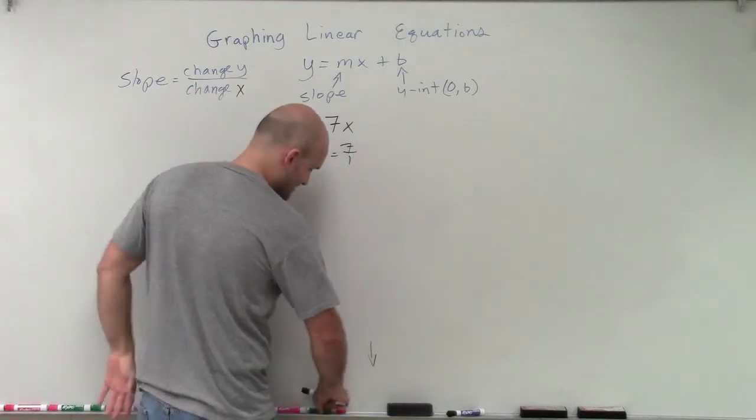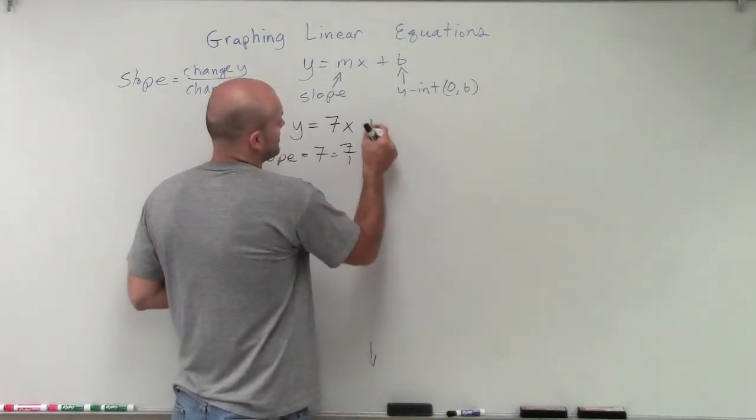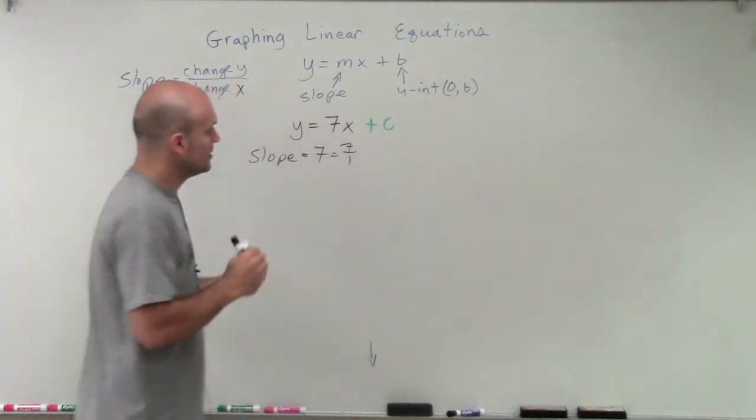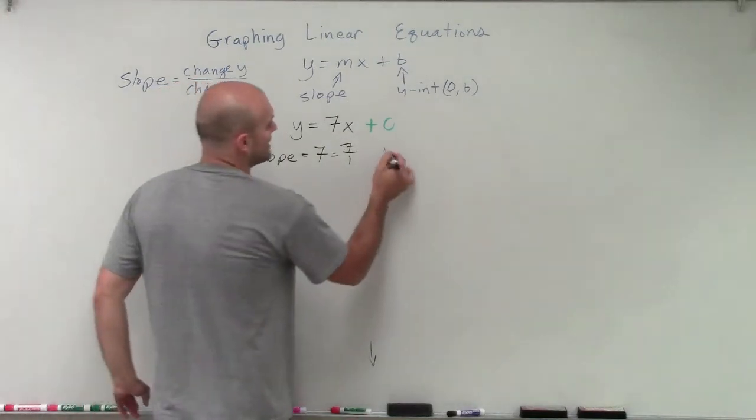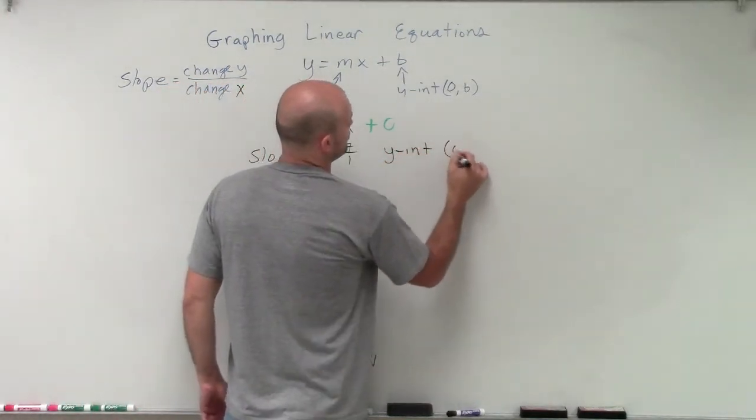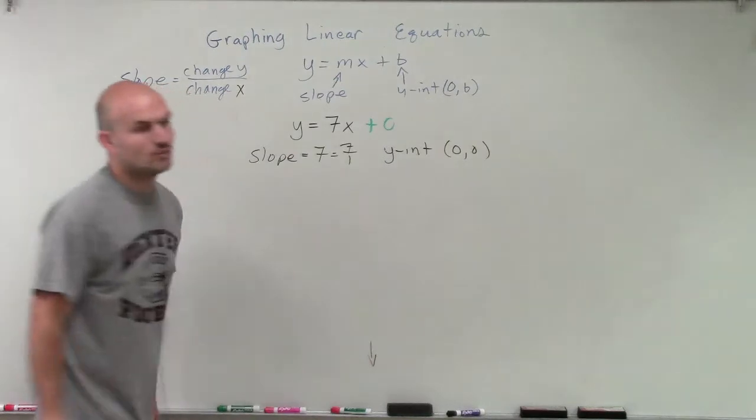So therefore, I can really rewrite this as 7x plus 0. So therefore, my y-intercept is going to be at the origin of 0 comma 0.